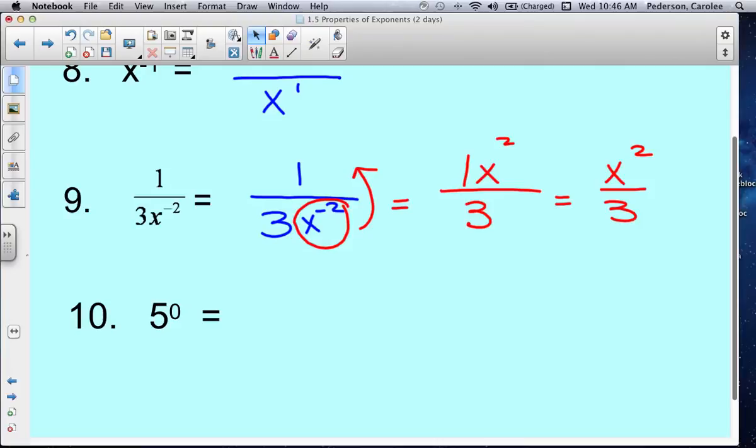Example 10: 5 raised to the 0 power. One of the properties says if we have anything raised to the 0 power, then it is 1.